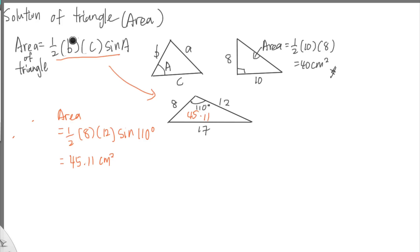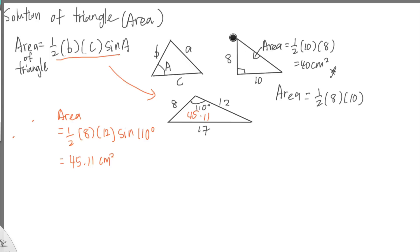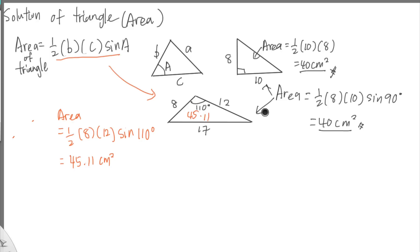A lot of students might ask: does this formula also apply to a right triangle? Yes, it does. For the right triangle with sides 8 and 10 and the 90-degree angle between them, we get one half times 8 times 10 times sine 90°. Since sine 90° equals 1, you get 40 cm squared — the same answer as before. So this formula works for both right triangles and non-right triangles.